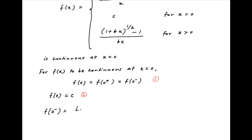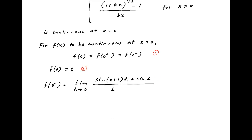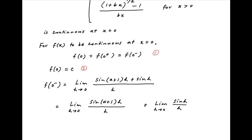The left-hand limit of f(x) at x = 0 can be written as limit h tending to 0, sin(a+1)h + sin(h) upon h. This can be broken into two components: the first is limit h→0 of sin(a+1)h divided by h, and the second is limit h→0 of sin(h) upon h. Multiplying and dividing by (a+1) in the first term, and noting that sin(a+1)h upon (a+1)h tends to 1 as h tends to 0.